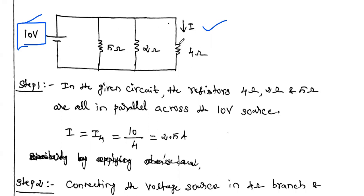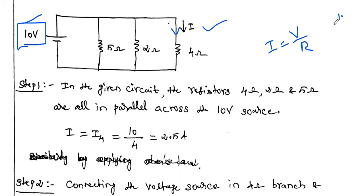Since we know the voltage across the 4 ohm resistor and its resistance value, we can find the current flowing through this branch using Ohm's law. The current I equals the voltage across the particular branch divided by the particular resistance. The voltage across the 4 ohm resistor is 10 volt, so 10 divided by 4 gives the current flowing through the 4 ohm resistor — that is 2.5 amps.